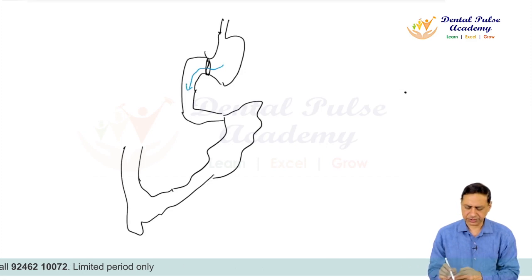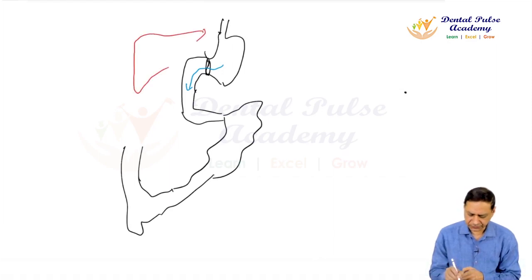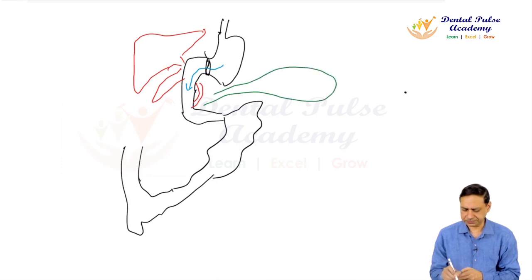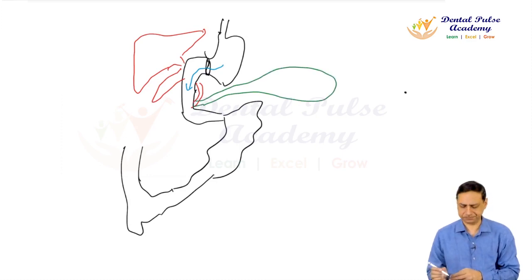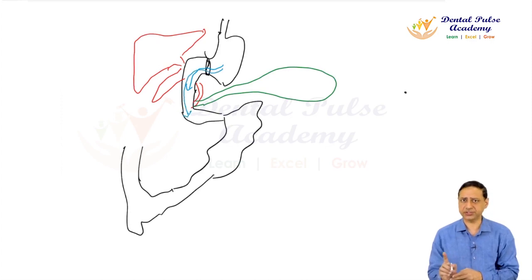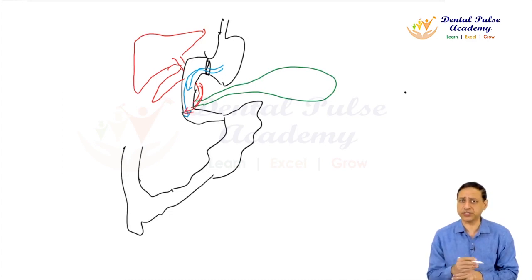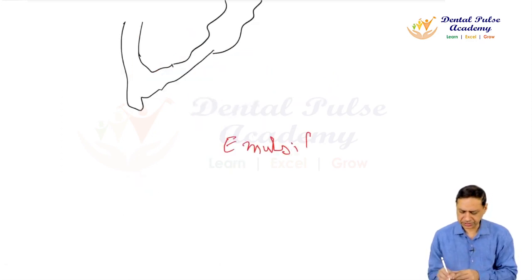Food will enter the small intestine, and in the small intestine we have two associated glands — the liver and the pancreas. The liver secretes bile juice, and the gallbladder stores it via the bile duct. The function of bile juice is emulsification of fat.